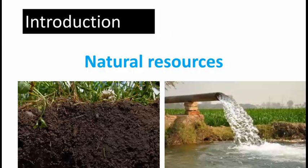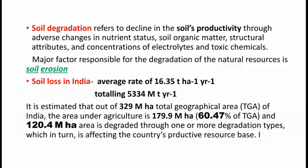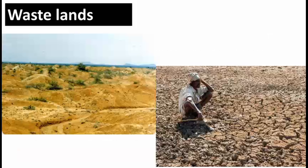Soil degradation is nothing but the decline of soil's productivity, loss of nutrient content and organic matter. Soil erosion is the major responsible factor for soil degradation. In India, the average soil loss is 16.35 ton per hectare per year, that is almost 5000 million tons per year — a loss of fertile soil. The geographical area of India is 329 million hectares, the area under agriculture is 180 million hectares, and 120 million hectares is already degraded.